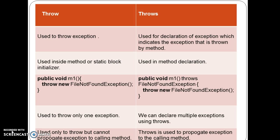For example, using throw: public void m1() { throw new FileNotFoundException(); } — this can appear inside a method or static block. For throws: public void m1() throws FileNotFoundException — here the exception is declared in the method signature, not inside the method body.